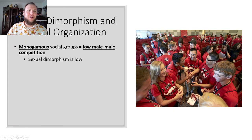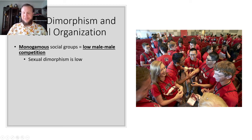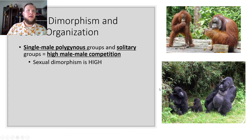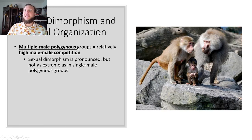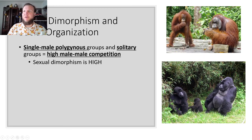Monogamous social groups show low male-to-male competition and low sexual dimorphism, as we can see with ourselves compared to gorillas. Here we see high sexual dimorphism between the gorilla pair, and with multiple male polygynous groups like geladas, the male is much bigger but not quite as big a difference as with the gorilla pair or the orangutan pair.